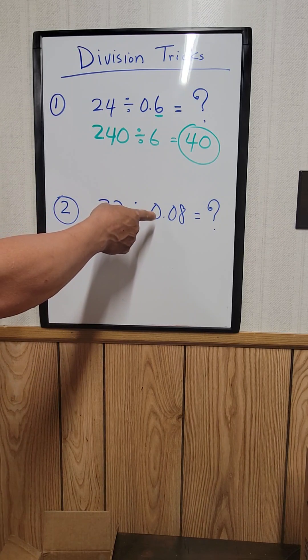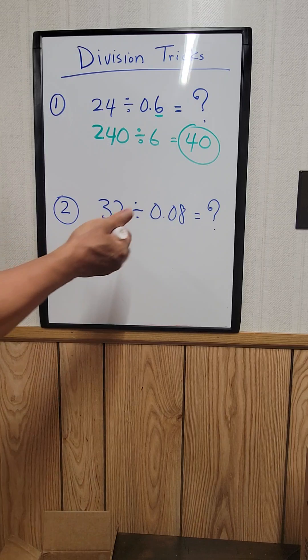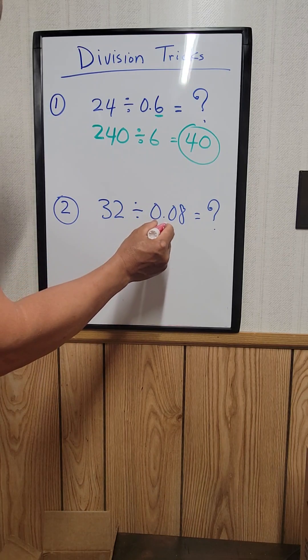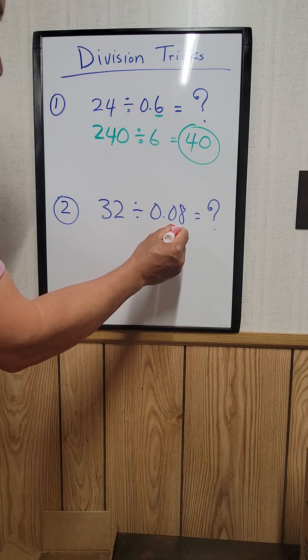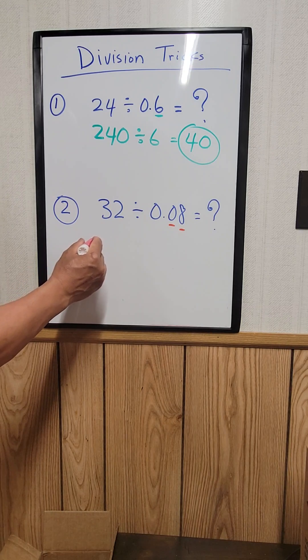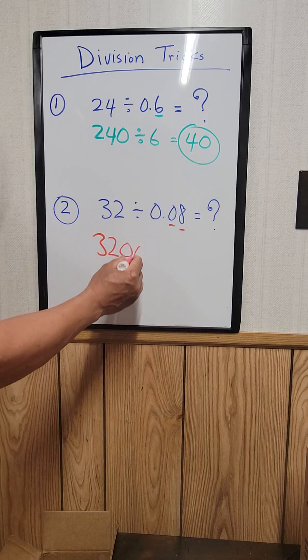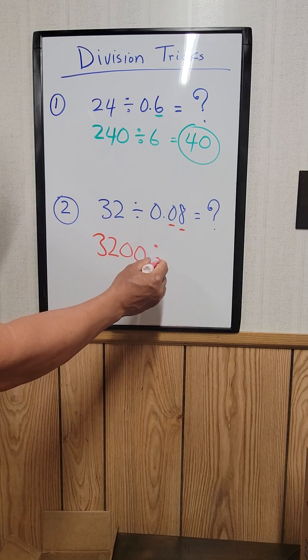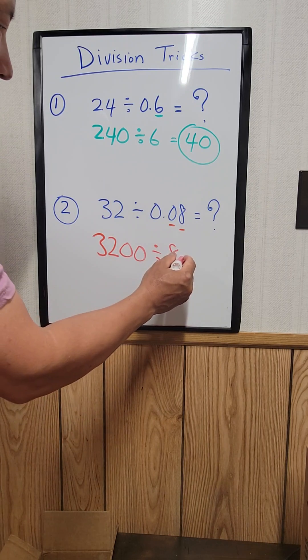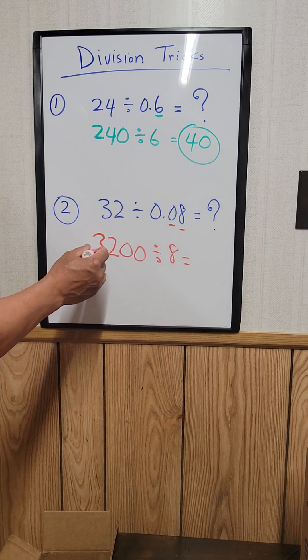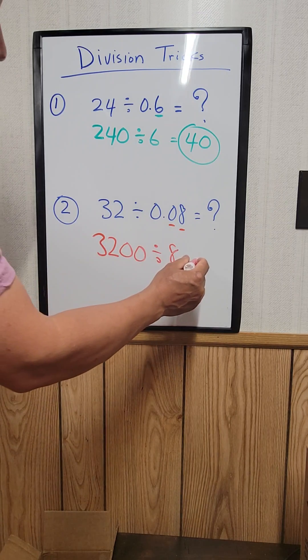32 divided by 0.08. How many places after the decimal? Two places. So you can rewrite this as 3200, then divide by 8. You know 32 divided by 8 equals